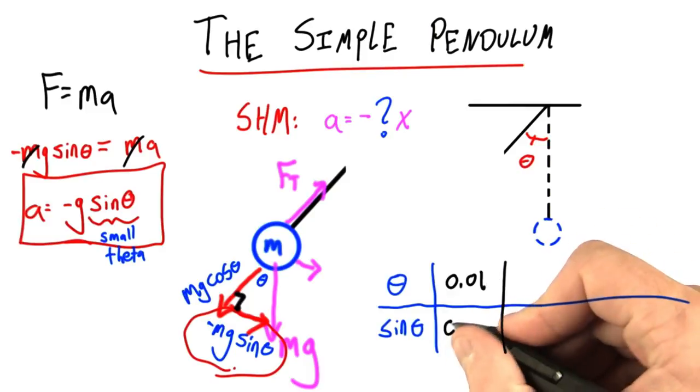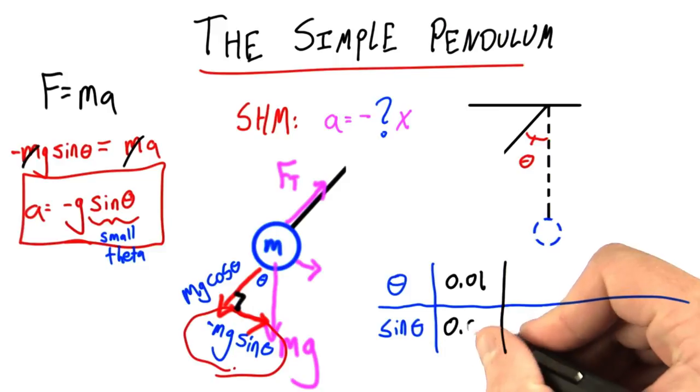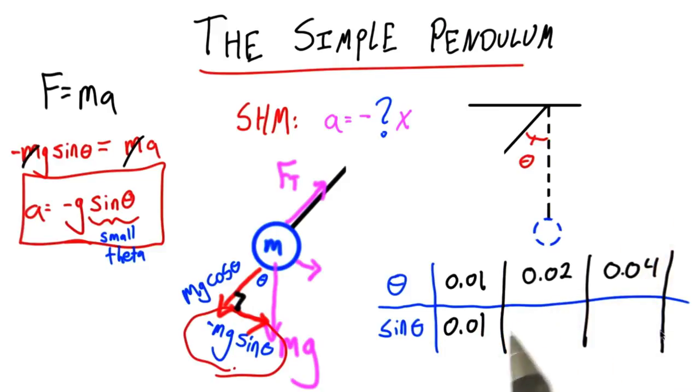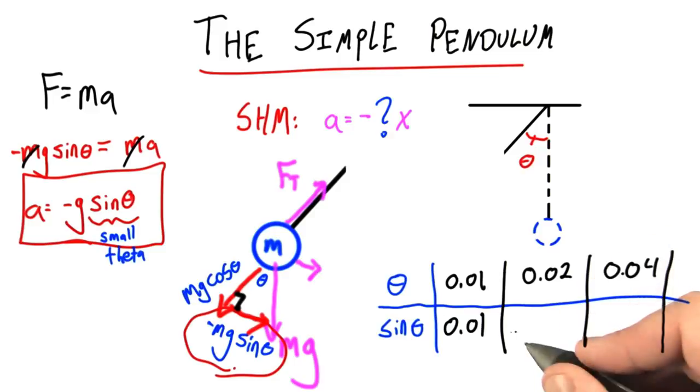But if I round that up to any reasonable number, it's 0.01. Can you do the same thing for 0.02 and 0.04? Just enter your answers in this box and this box.